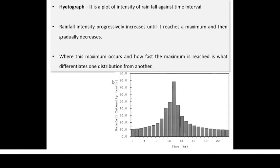This graph shows intensity in millimeters per hour because the data is obtained from a recording rain gauge, which gives us a continuous amount of rainfall. If the data had been collected from a non-recording rain gauge, we would have the daily value of intensity — in that case, millimeters per day.